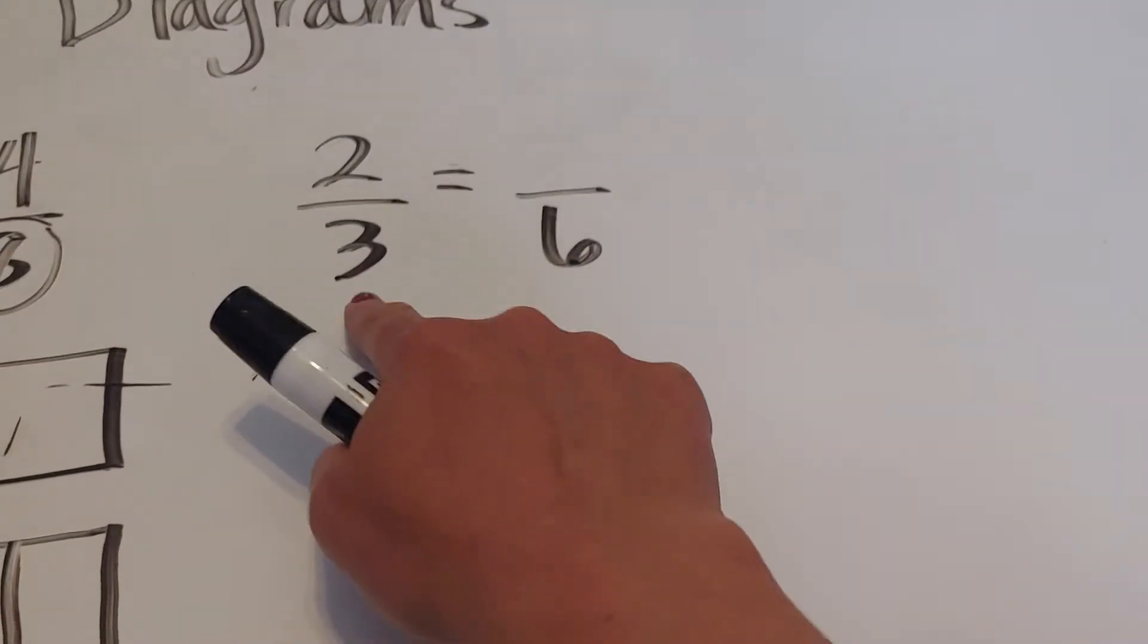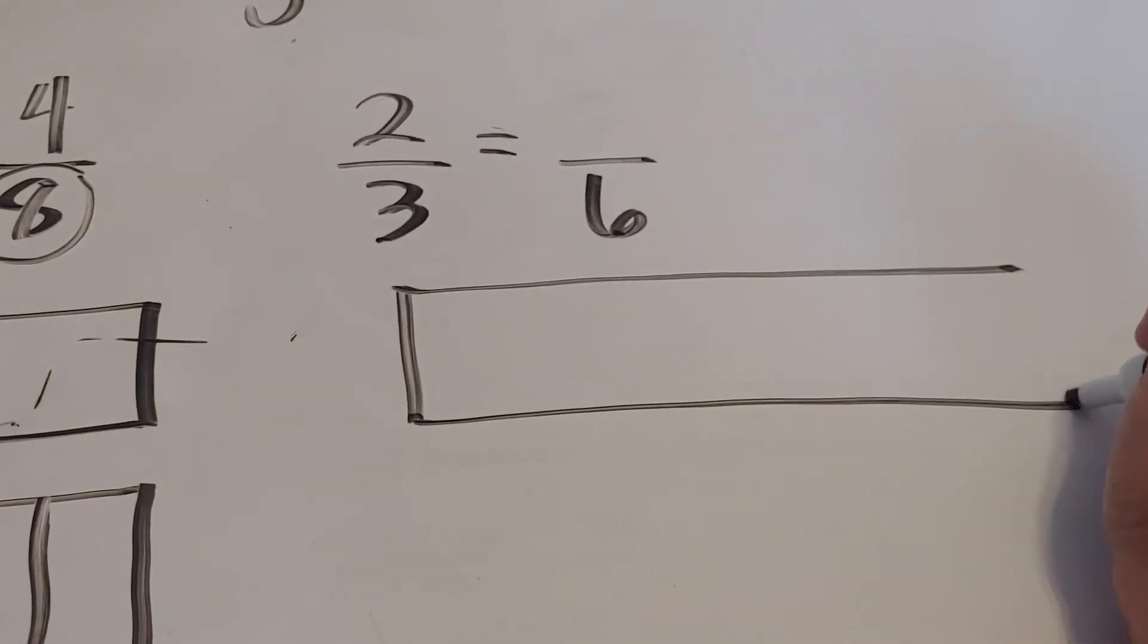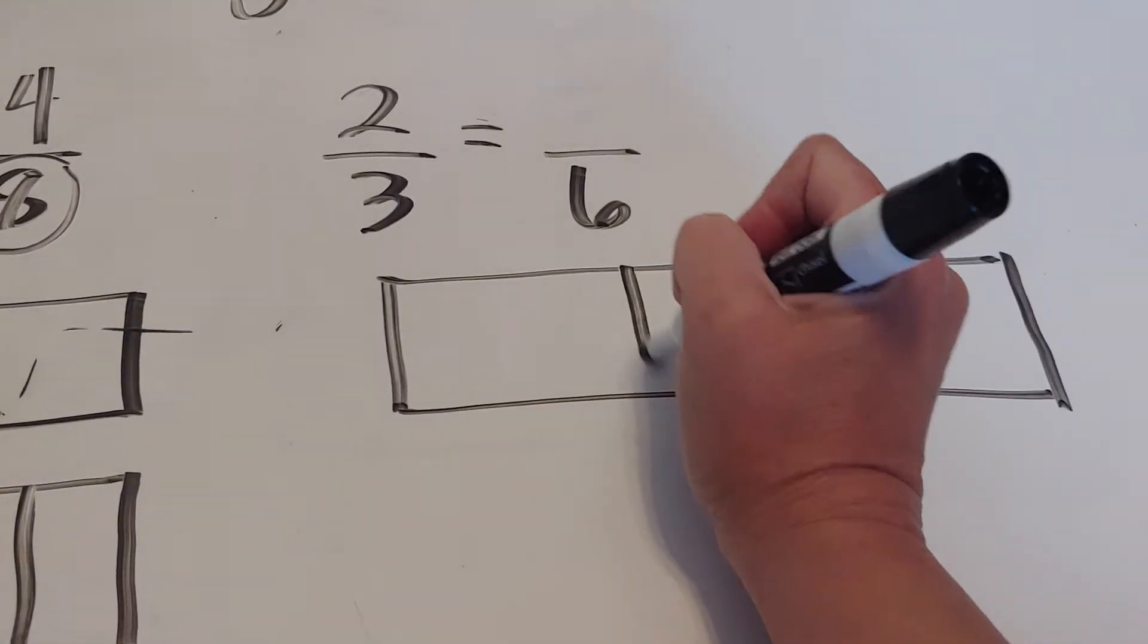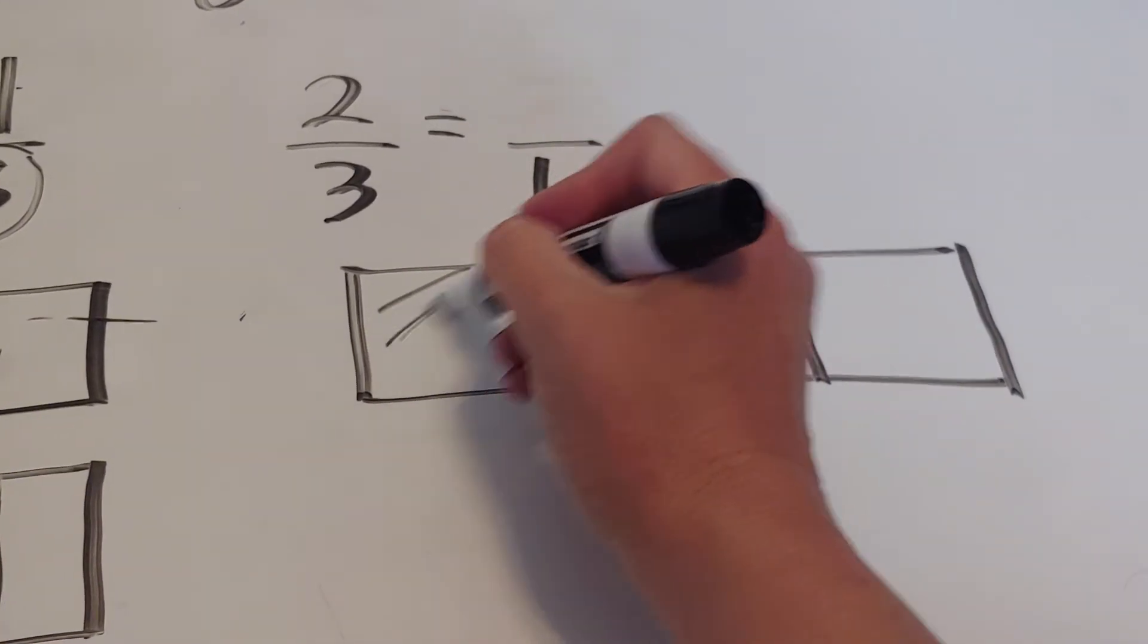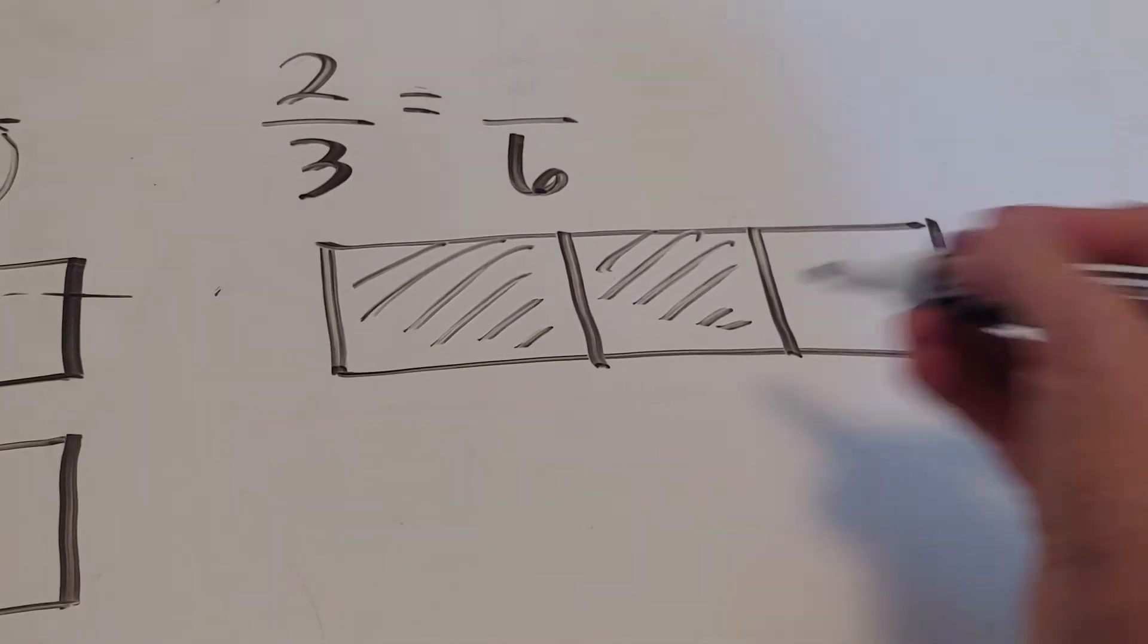We're going to start off drawing two thirds. There's thirds and we're going to shade two of them. So there we go, that's two thirds.